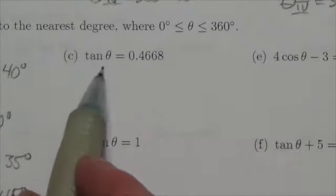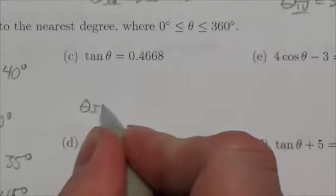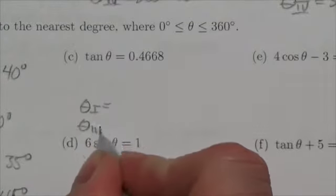Now, the ratio here is tangent. Tangent is positive. Tangent is positive in quadrant 1 and in quadrant 3.